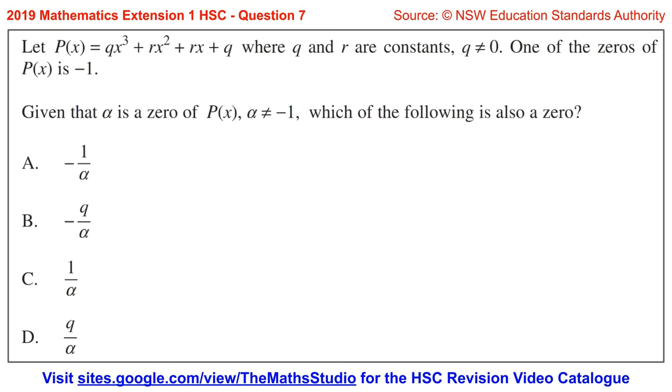One of the zeros of P(x) is -1. Given that α is a zero of P(x), α ≠ -1, which of the following is also a zero?